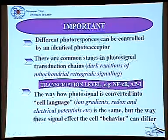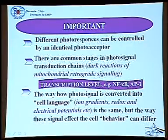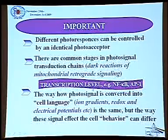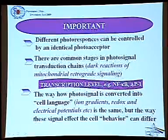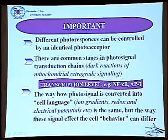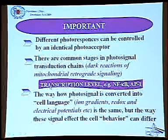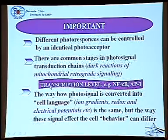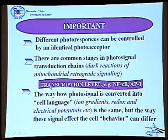There are common stages in phototransduction chains — the so-called net reactions of mitochondrial retrograde signaling. There are changes at the transcription level, measured at least in nuclear factor kappa-B or AP1 protein levels. The way the photosignal is converted into cell language is the same, but how it changes cell behavior in response to light irradiation can differ.